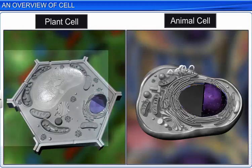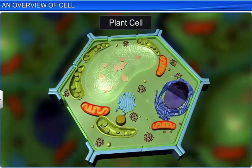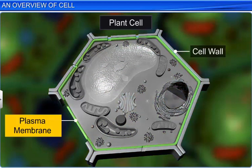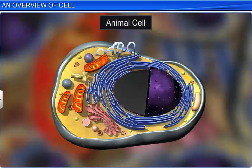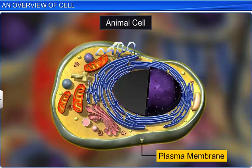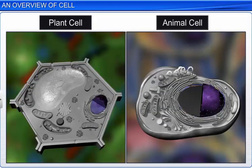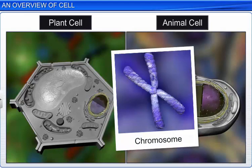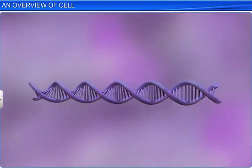is surrounded by a distinct cell wall on the outside and a plasma membrane on the inside, whereas an animal cell lacks a cell wall and has a plasma membrane instead that forms the outer cell boundary. Both animal and plant cells have a dense and spherical structure called the nucleus, which contains thread-like structures called chromosomes. Each chromosome is made of deoxyribonucleic acid, or DNA, which stores the genetic information of the organism.